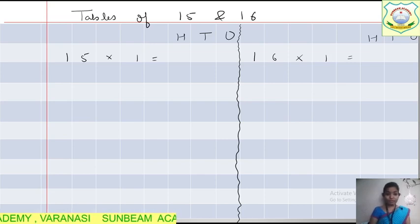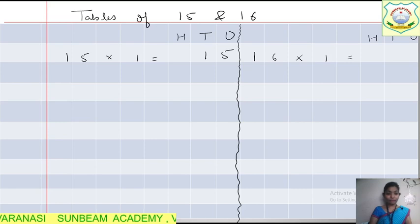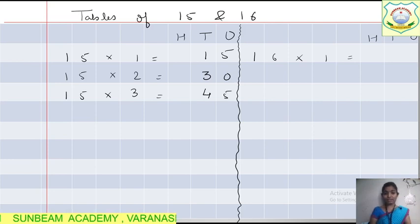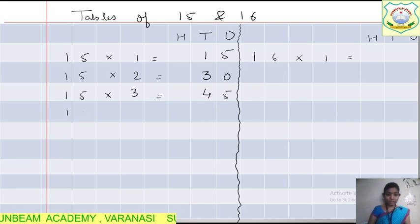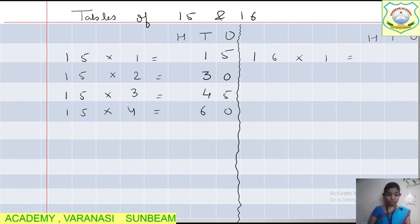15 ones are 15 — write that in the 1s and 10s columns. When there are 3 digits, we will go to the 100s place. Next: 15 multiplied by 2 equals 30. Then 15 threes are 45. Then 15 fours are 60. When there are two digits, use the 10s and 1s columns carefully.